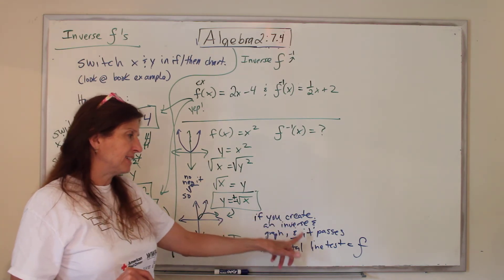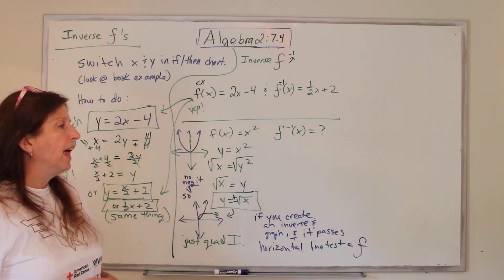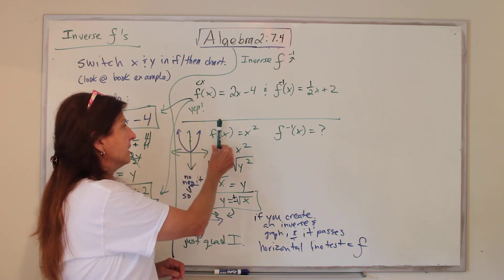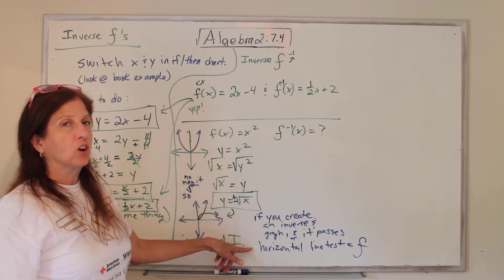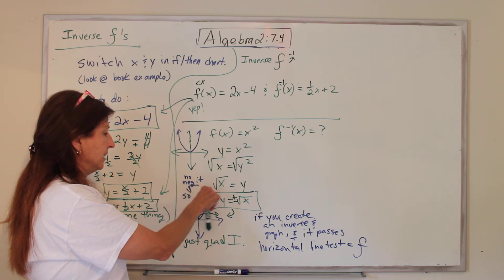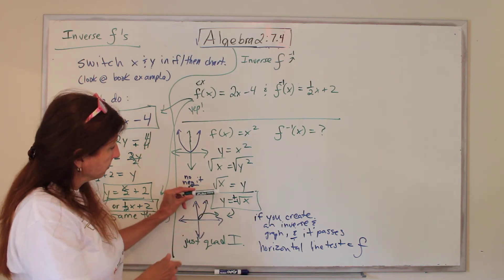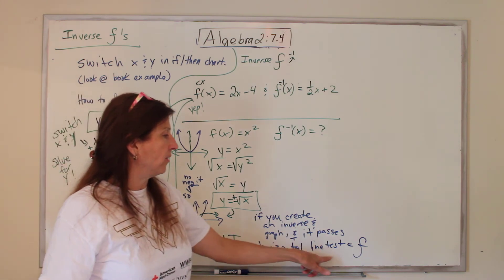Once you graph the original and its inverse, you can test to see if the inverse is a function. Remember functions have certain rules. One is that it passes the vertical pencil test. If it's an inverse, you can graph it and do the pencil this way.